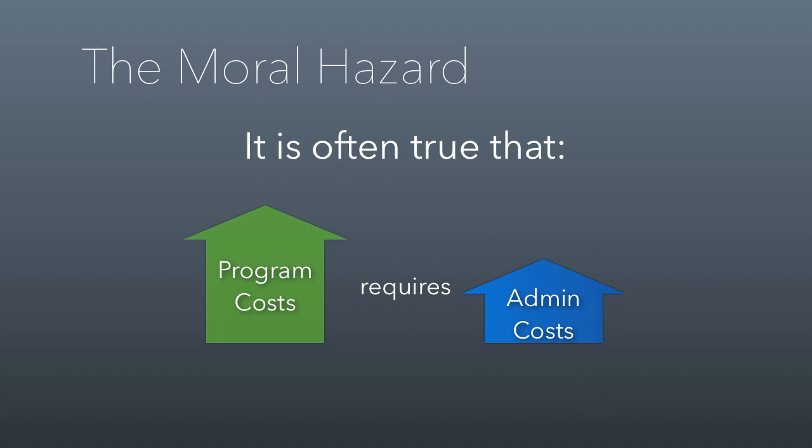Usually, an increase in program costs requires still an increase in admin costs, but not quite as dramatic as the increase in program costs. This is because you probably have capacity with your administration to take on more program opportunities if you had additional revenue for those programs. You don't necessarily need, for example, to hire an extra accountant just because you got more money. Program ratios are not the most useful way to evaluate the way non-profits operate because they could have great program ratios and terrible impact.